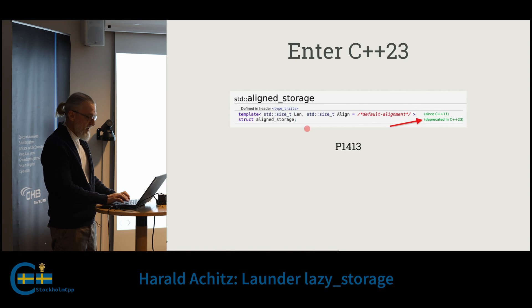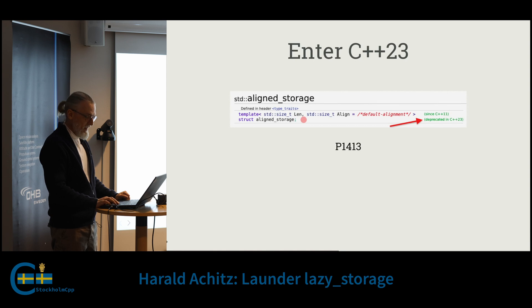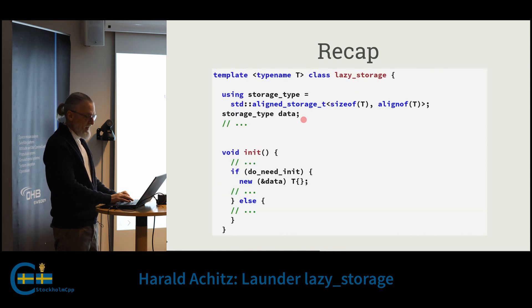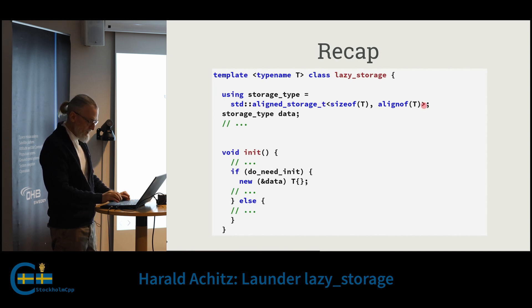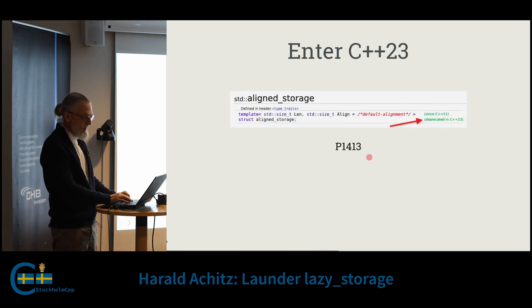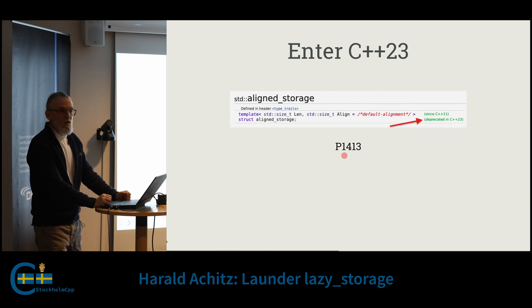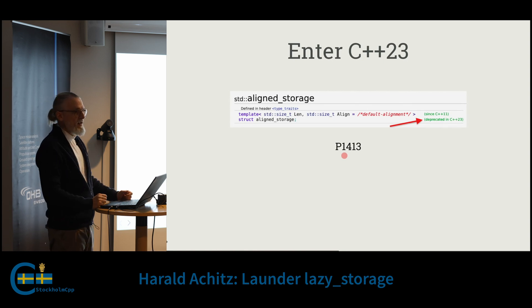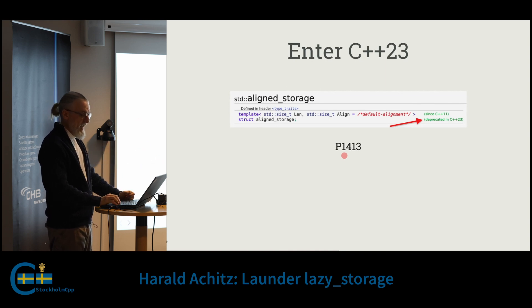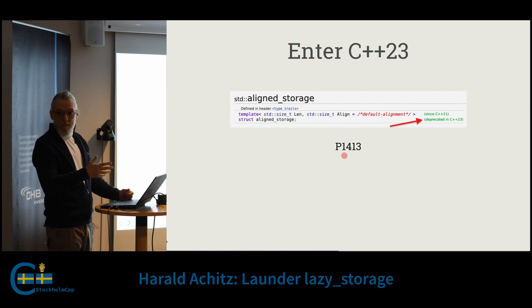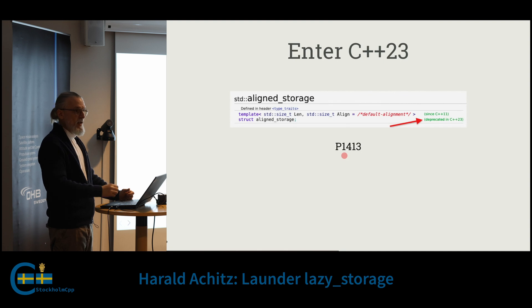C++23 — oh my god — aligned_storage is deprecated. One of the reasons is that a lot of people have forgotten the '::type' member, and there is paper P1413 which explains in detail why this is a problem with certain type traits. The conclusion was it cannot be made 100% secure or behave as expected, so it needs to be removed. OK, let's remove it.